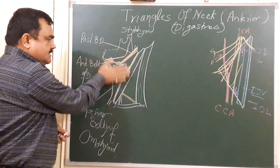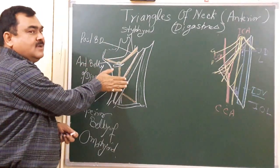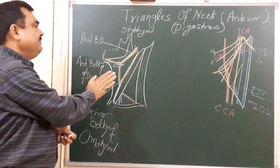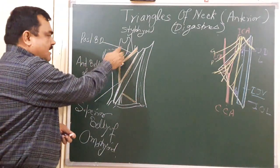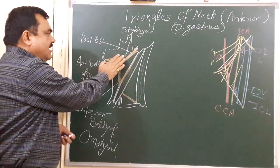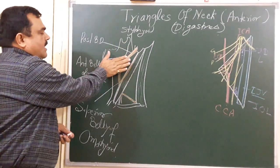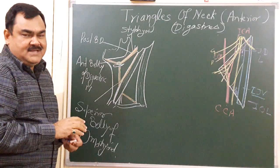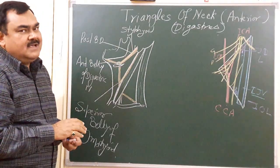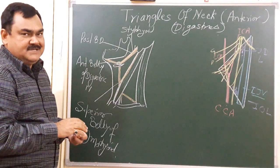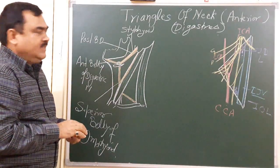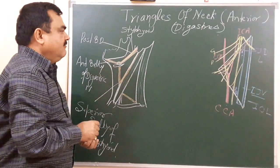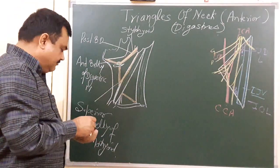The roof of this triangle is formed by skin, then superficial fascia which contains the platysma muscle, the cervical branch of the facial nerve, then deep fascia — that is the investing layer of the deep cervical fascia.